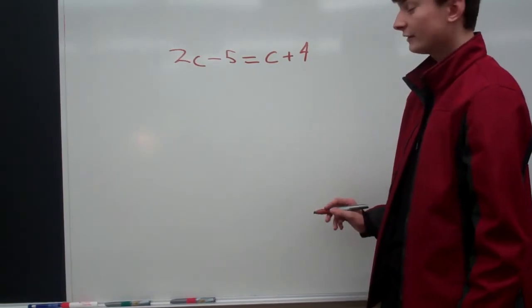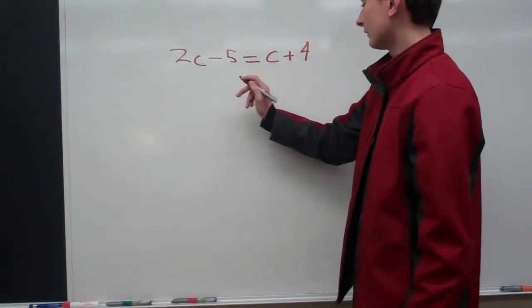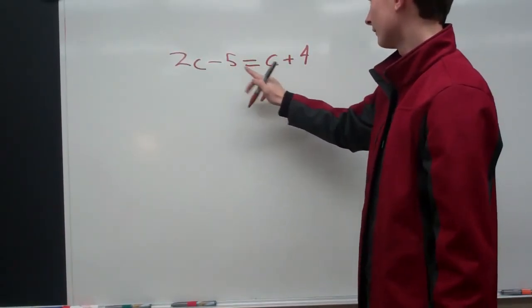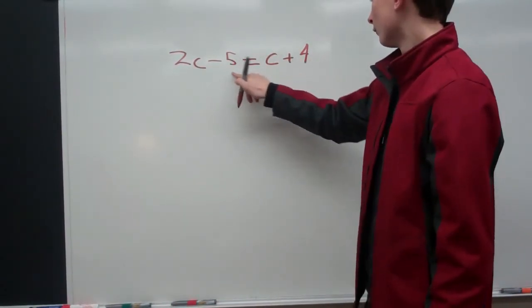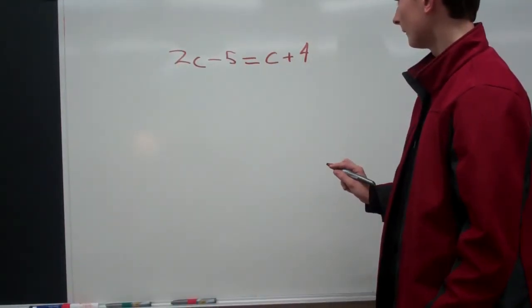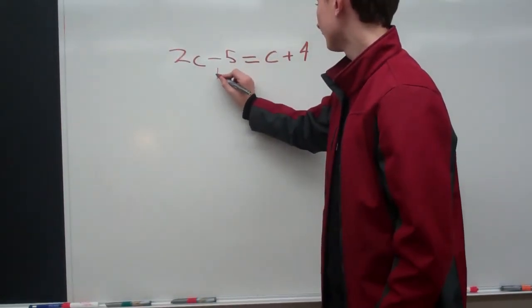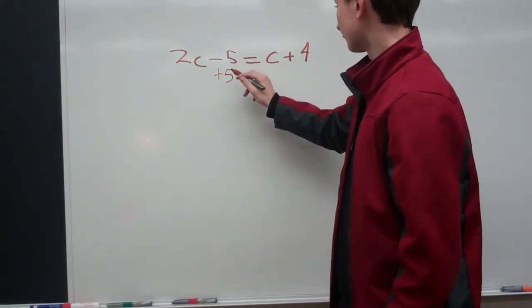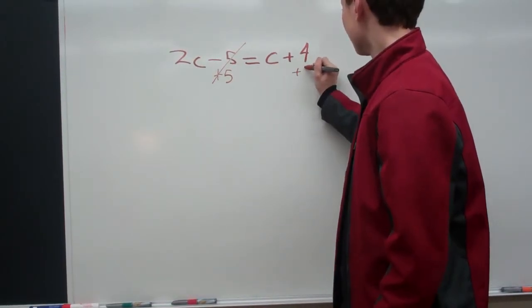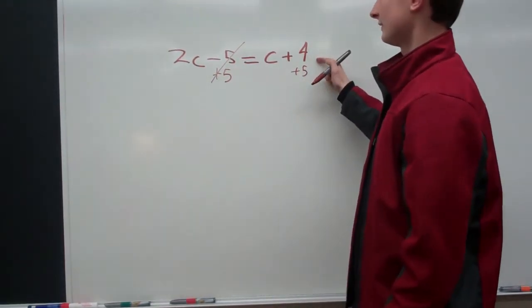So, what we need to do is we need to get these two c's together and the two normal numbers together on the same side. So, what we're going to do is we're going to add five from this side, and since we're adding this side, it crosses out here, over to this side, we're just going to make this a nine.